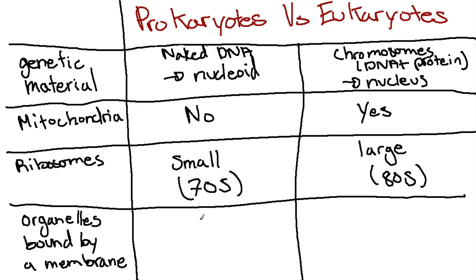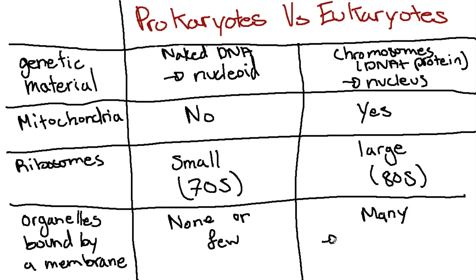And finally, organelles bound by a membrane. In prokaryotes, there are no organelles bound by a membrane, or very few. In eukaryotes, on the other hand, there are many. Examples are the Golgi apparatus and the endoplasmic reticulum.